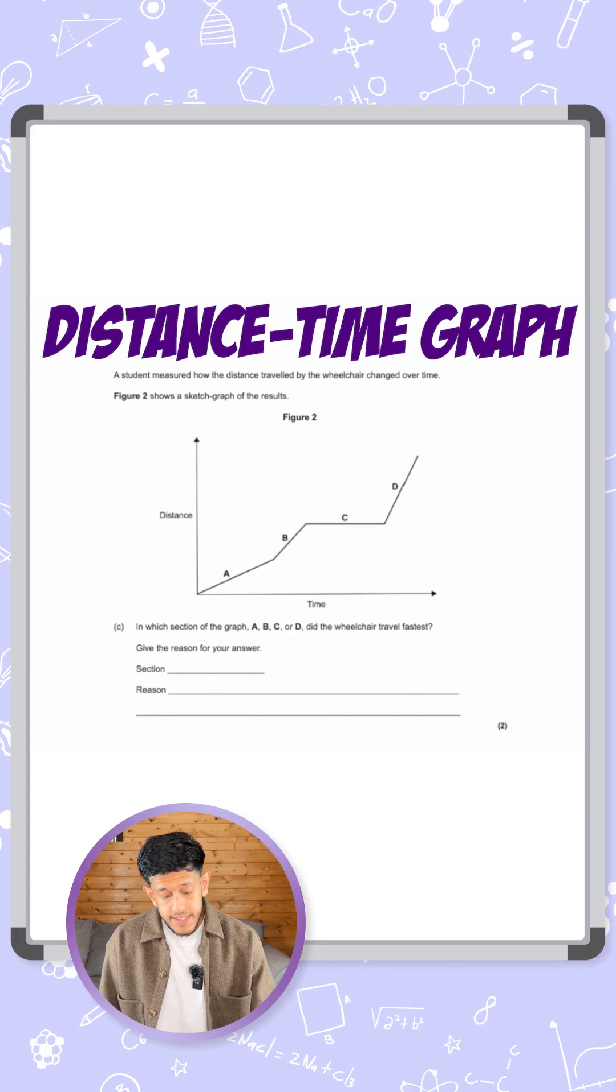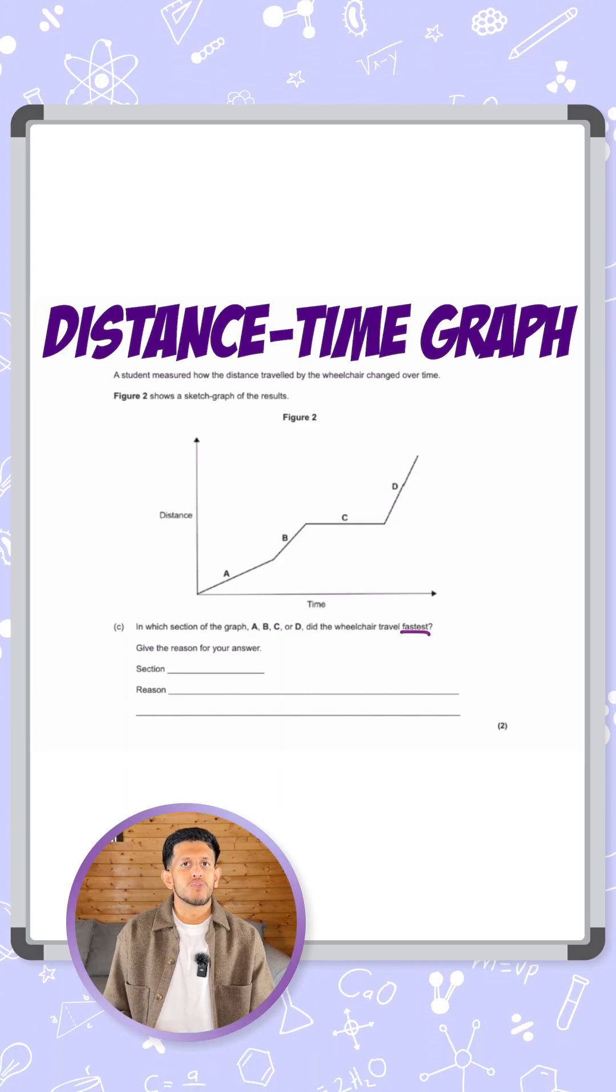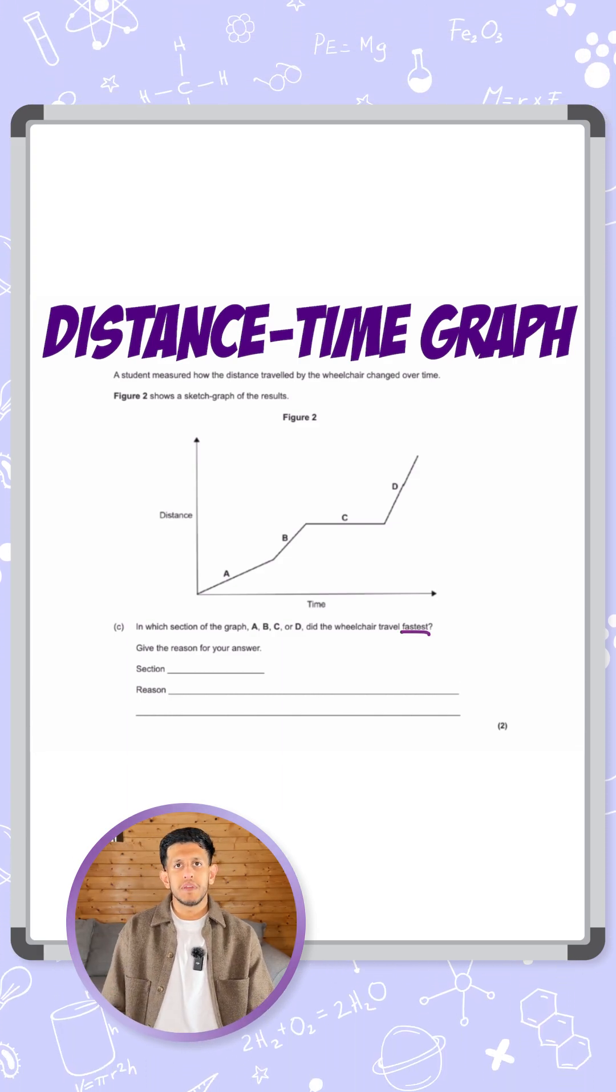So it's a distance time graph and they're asking at which point did the wheelchair travel the fastest. So it's talking about speed, when was it at the highest speed.